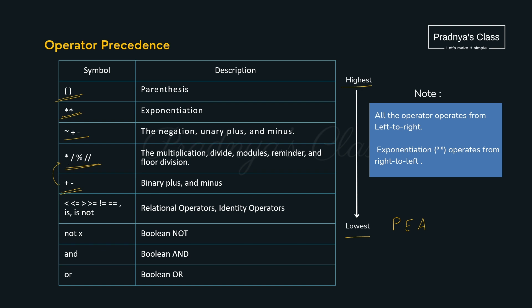Next priority is given to relational operators, and at last we have logical operators. To remember the precedence, use the word PEARL. For logical operators specifically, the priority order is: not has the highest priority, then and, then or — remember the word NAO.